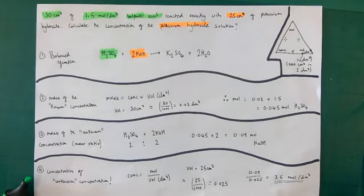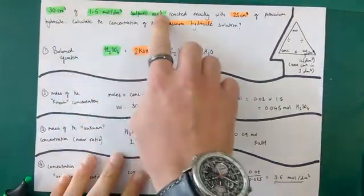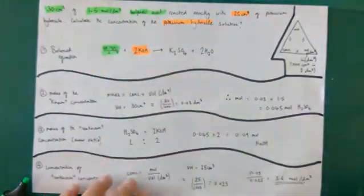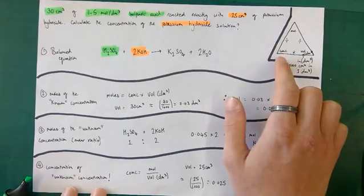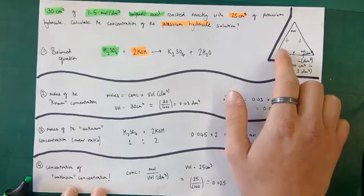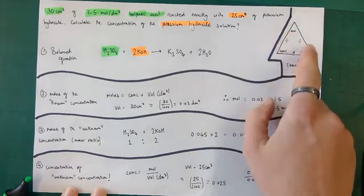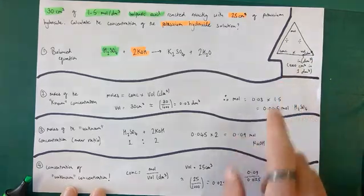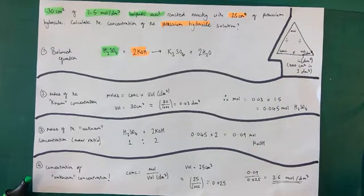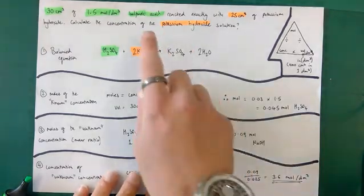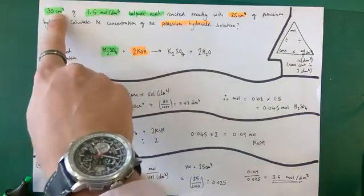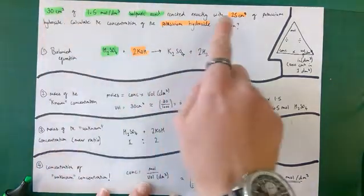We're going to start with the sulfuric acid — that's our entry point. It's a different formula triangle this time: concentration equals moles over volume. The volume must be in decimetres cubed — a decimetre cubed is essentially a litre. There are 1,000 cm³ in one dm³, so to convert cm³ to dm³ you divide by 1,000. People always forget this conversion.